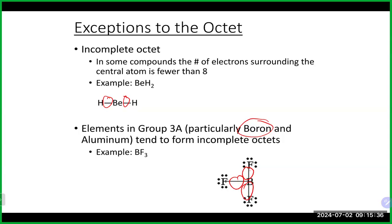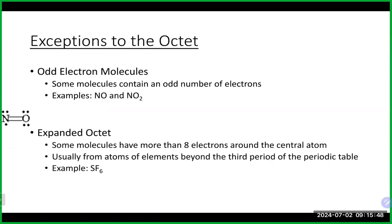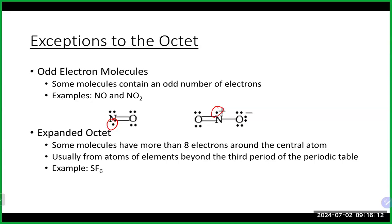The second exception is an odd number of electrons. Some molecules have an odd total number of valence electrons, meaning someone will have an unpaired electron. Examples include NO and NO2. Molecules with unpaired electrons are called free radicals — chlorine does this a lot in the atmosphere. They are very reactive because they want to pair that electron.